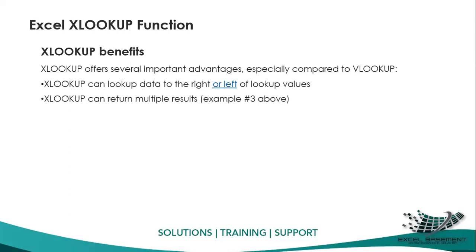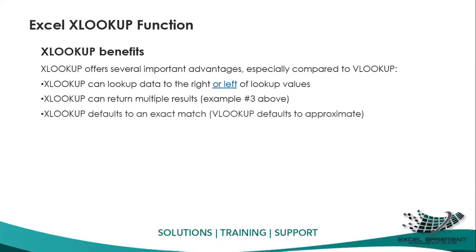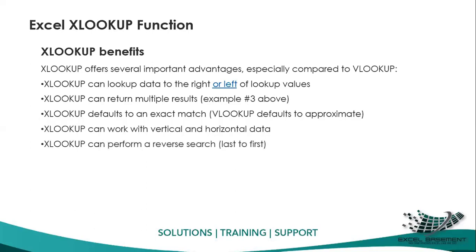The second benefit is that XLOOKUP can return multiple results. Third, XLOOKUP defaults to an exact match, whereas VLOOKUP defaults to approximate match — in VLOOKUP you must explicitly write TRUE or FALSE, and skipping it applies TRUE by default. In XLOOKUP the default is exact match (zero). XLOOKUP works on both vertical and horizontal ranges, can perform reverse searches (last to first), and can return entire rows or columns, not just one value.